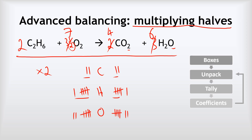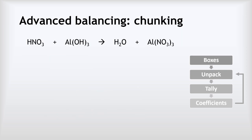That gives our balanced equation: 2C₂H₆ + 7O₂ → 4CO₂ + 6H₂O. Let's verify: carbons — 2 × 2 = 4 left, 4 × 1 = 4 right ✓; hydrogens — 2 × 6 = 12 left, 6 × 2 = 12 right ✓; oxygens — 7 × 2 = 14 left, 4 × 2 + 6 × 1 = 14 right ✓. So if you find yourself needing a half as the last step, put it in and then just double everything.